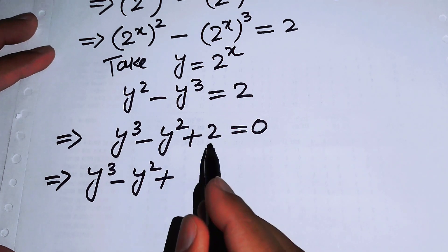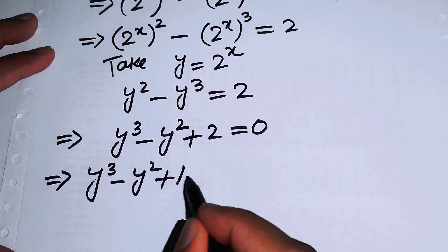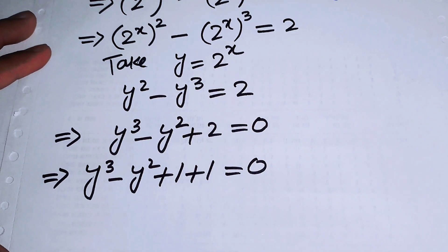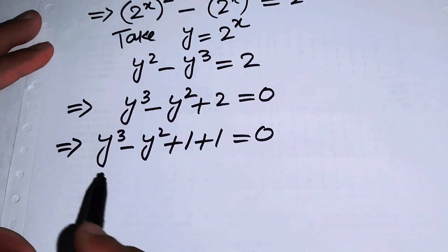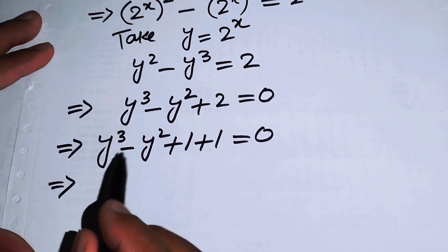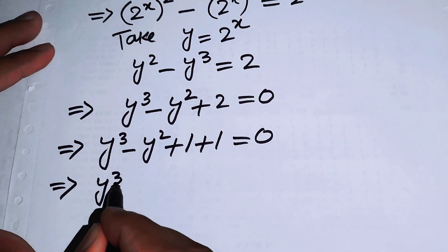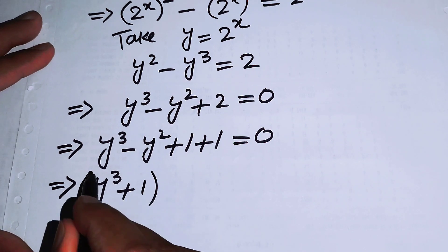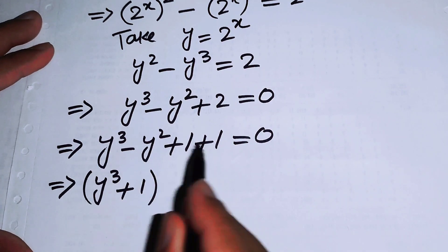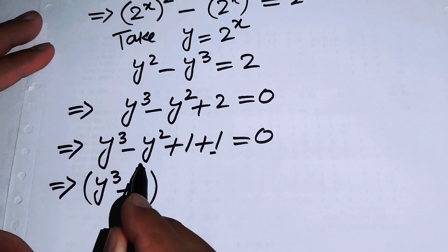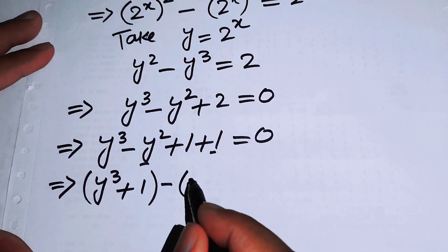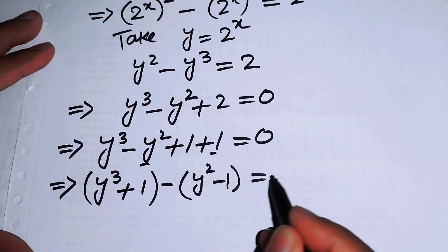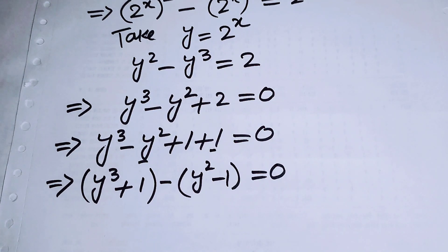We write y cubed minus y squared plus 2 by breaking 2 as 1 plus 1, giving y cubed minus y squared plus 1 plus 1 equals 0. Rearranging, we group this as (y cubed plus 1) minus 1 times (y squared minus 1) equals 0.